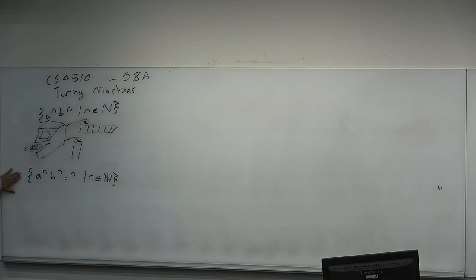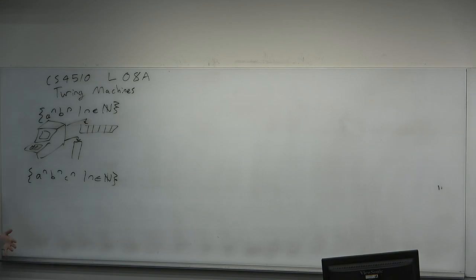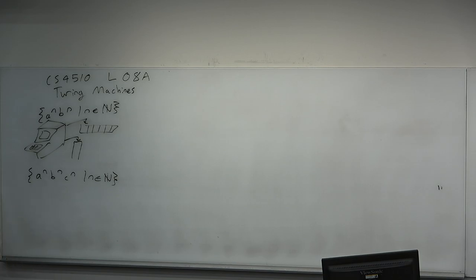We proved via the pumping lemma and the equivalence of context-free grammars and pushdown automata that the PDA could not decide A^N B^N C^N. In some sense, that language requires memorizing two things at a time, while the PDA can only memorize one thing of arbitrary size. The limitation is: once you pop something off the stack, unless you push it back immediately, it's forgotten — lost into the ether.